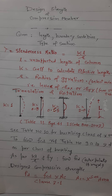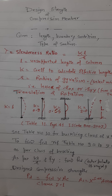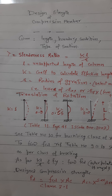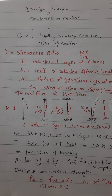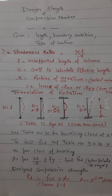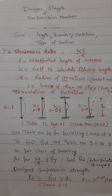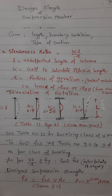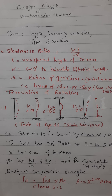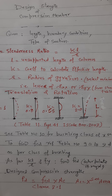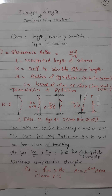Today we are going to discuss the design strength of a compression member — how much compressive force a member or section can take. There are various factors that affect the compressive strength of a member: the length of the member, the cross-sectional area of the member, the radius of gyration of the member, and so on. We will discuss these one by one.